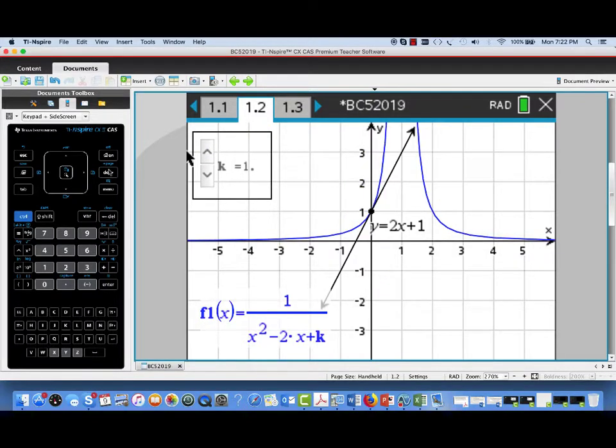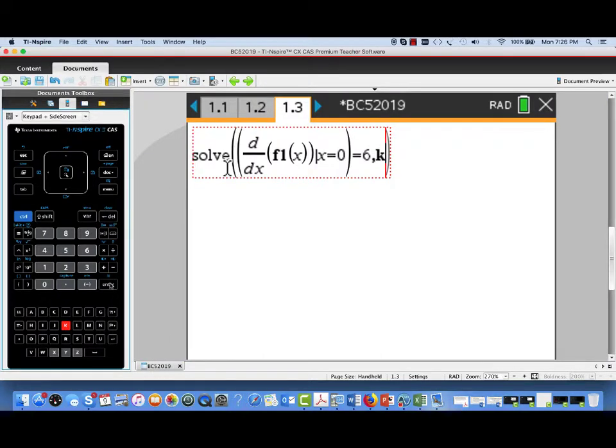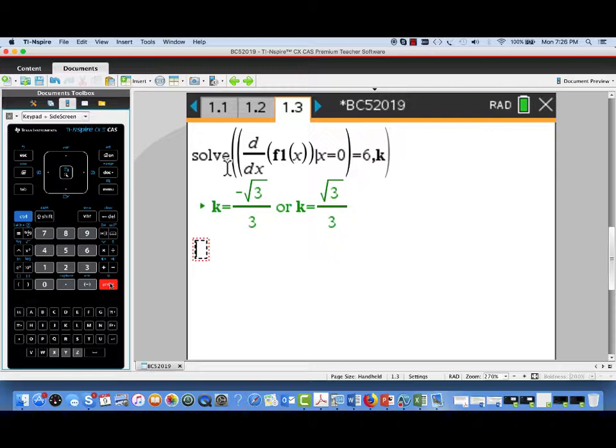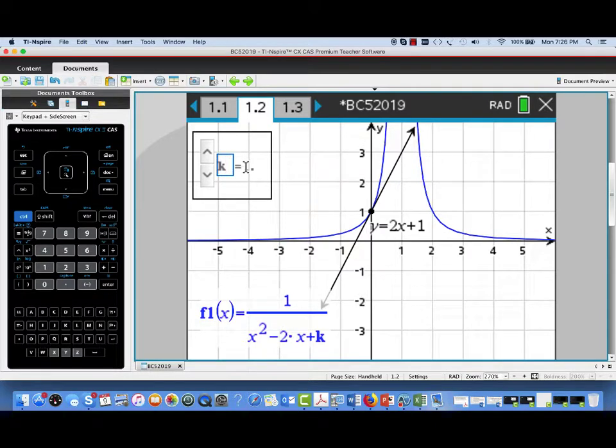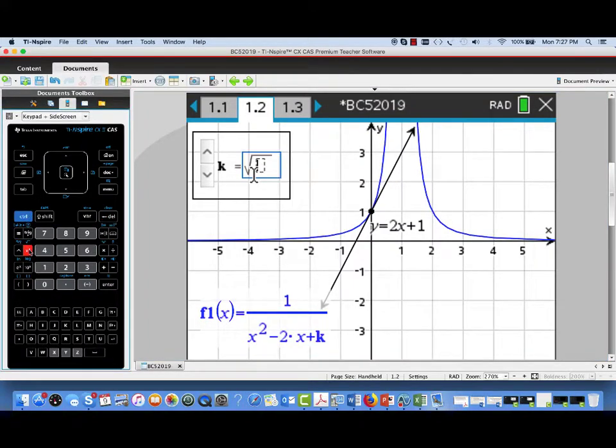Now I've returned to k equals 1, and we've gone to a notes page, and I've gone ahead and set up the equation we would need to solve to find that value of k. Notice I've set the derivative of my function at x equals 0, equal to 6, and solved. And noting that that value of k was square root of 3 over 3, at least one of the values,